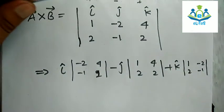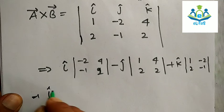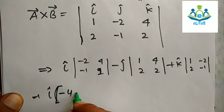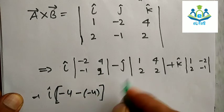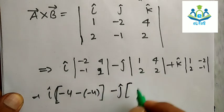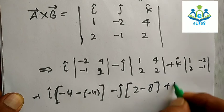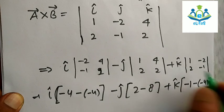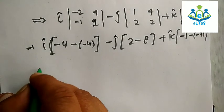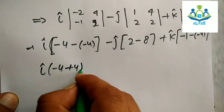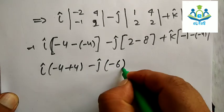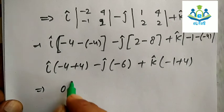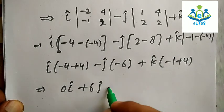Computing: i × (−2×2 − 4×(−1)) = i(−4 + 4) = 0i. Then −j × (1×2 − 4×2) = −j(2 − 8) = 6j. Then k × (1×(−1) − (−2)×2) = k(−1 + 4) = 3k. So a × b = 0i + 6j + 3k.